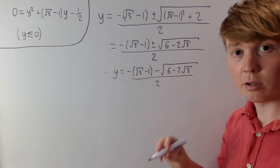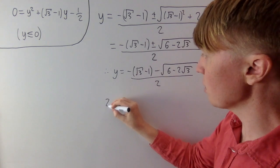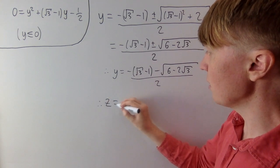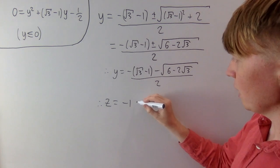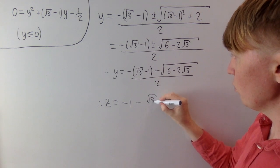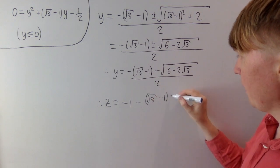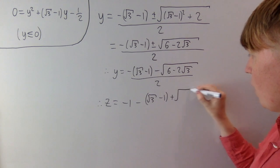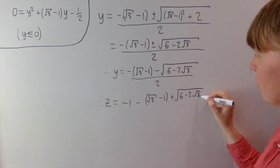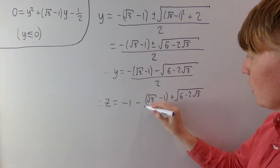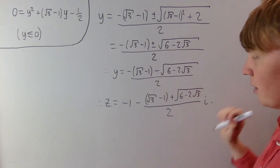This isn't the full solution — we were solving for z, a complex number. So z equals minus 1, plus the imaginary part: minus (root 3 minus 1) plus the square root of 6 minus 2 root 3, all divided by 2, times i.